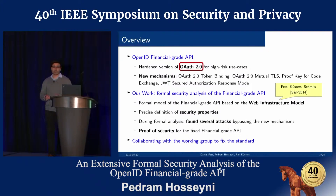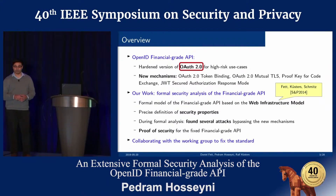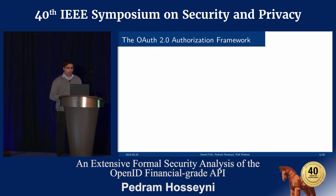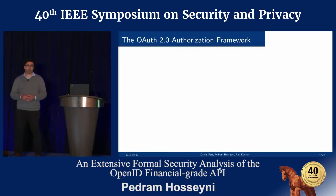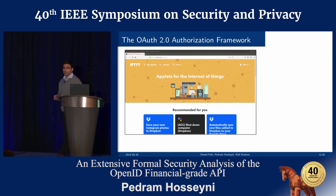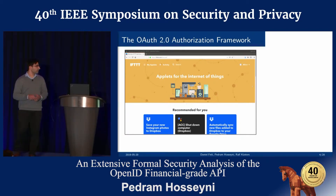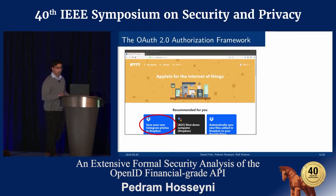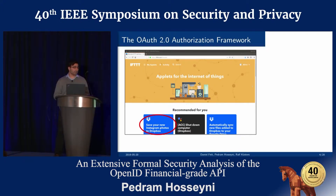We start with OAuth, on which the Financial Grade API is based. You'll find OAuth on many different web pages, for example login with Facebook or login with Google. Here we have as an example 'If This Then That,' which is a popular service that automates tasks across multiple other services — for example, it lets you save your new Instagram photos to your Dropbox.